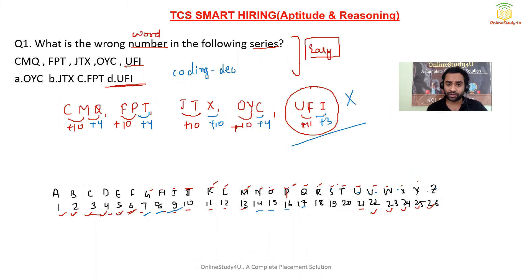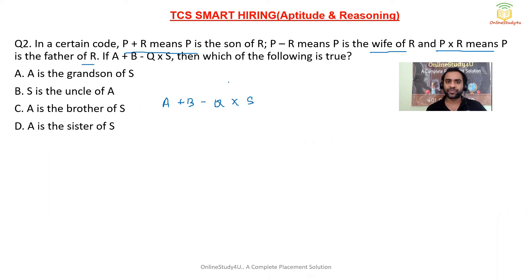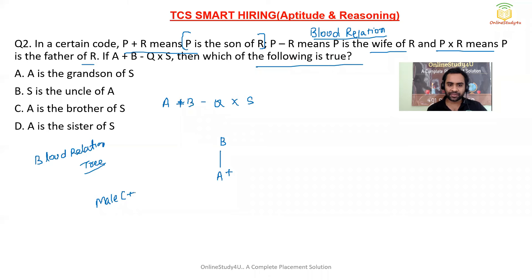Question two is from blood relations. In a certain code: P + R means P is the son of R; R − P means P is the wife of R; P × R means P is the father of R. Given: A + B − Q × S, which of the following is true? To solve this, we draw a blood relation tree. A + B means A is the son of B, so A is male.